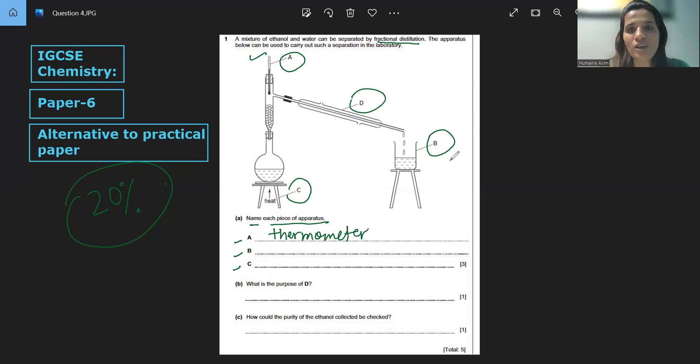Then we have B, which is beaker. Making sure they are asking for the apparatus. So what does it contain? Here, basically, that is distillate, right? But they want us to name the apparatus, we will be naming apparatus.